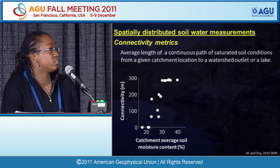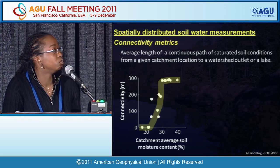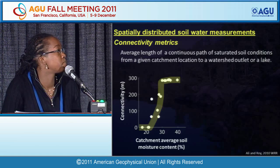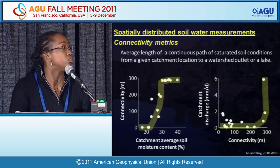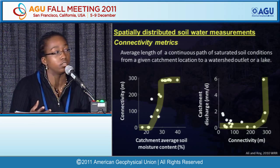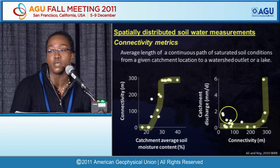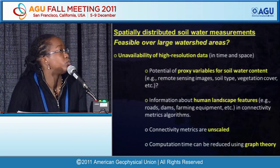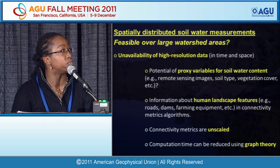Connectivity metrics rely on topographic information and percolation theory principles to answer that question. In a nutshell, a connectivity metric tells us over what average distance there is a continuous path of soil-saturated conditions from a given watershed location to the watershed outlet. For the Diermine catchment, there is a sigmoid-like relationship between connectivity distance and average soil moisture content, with a connectivity distance critical value above which discharge values are significantly higher. Some outlier points can be explained by differences in antecedent wetness conditions.